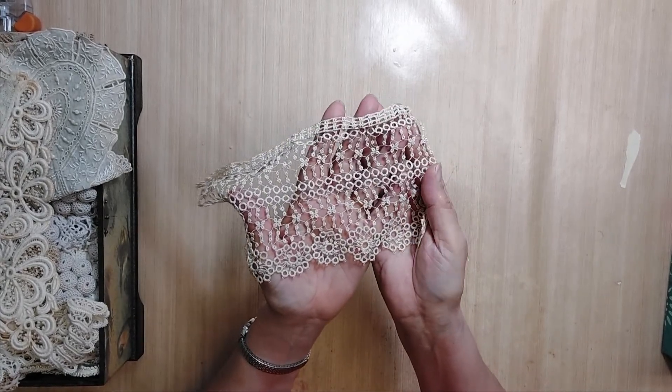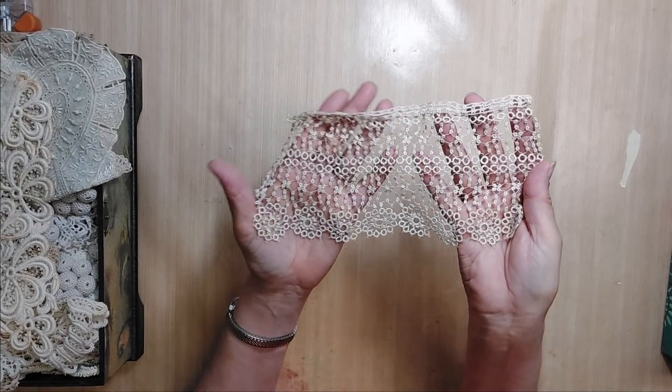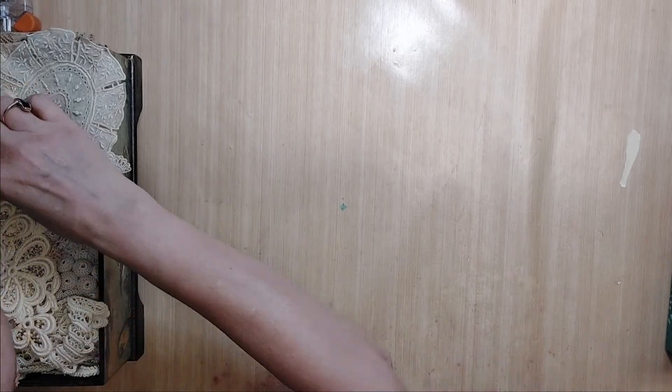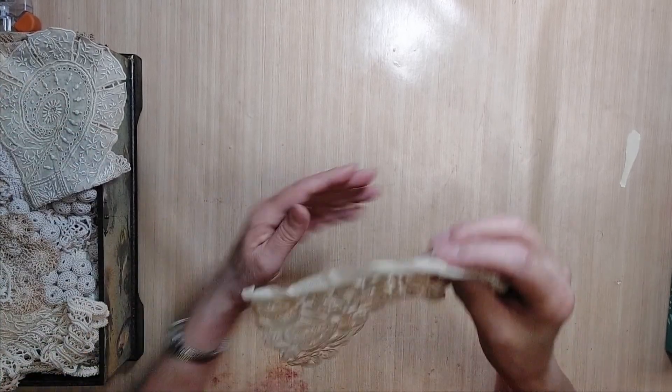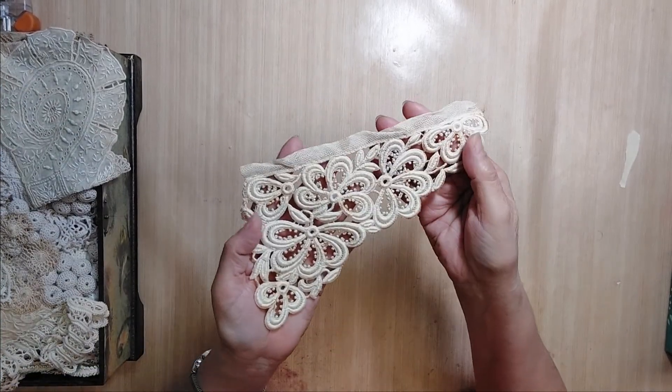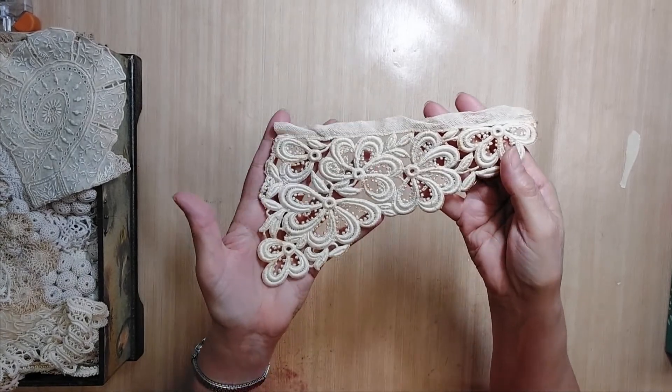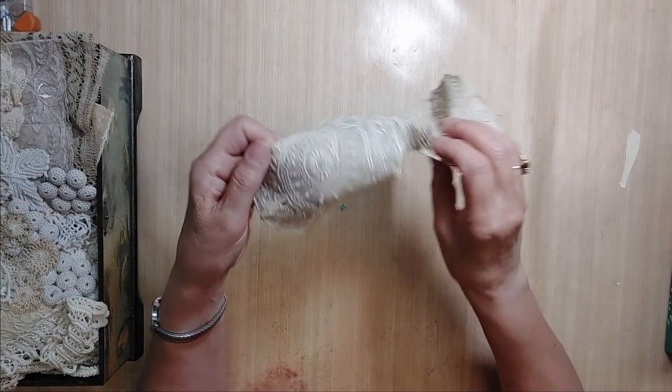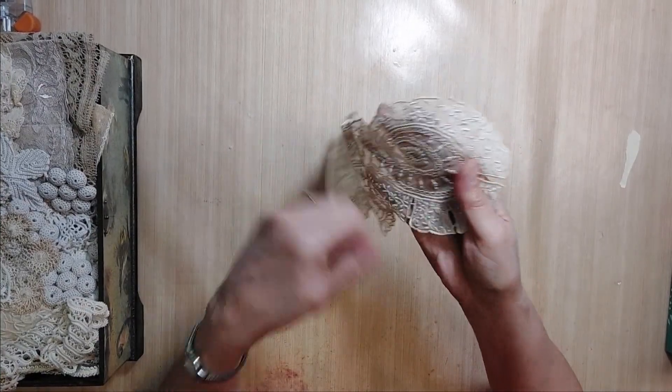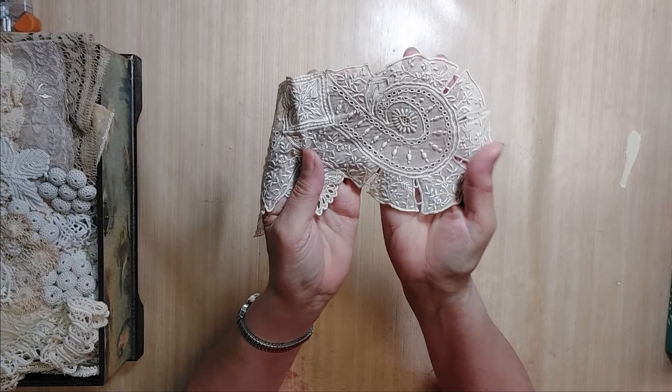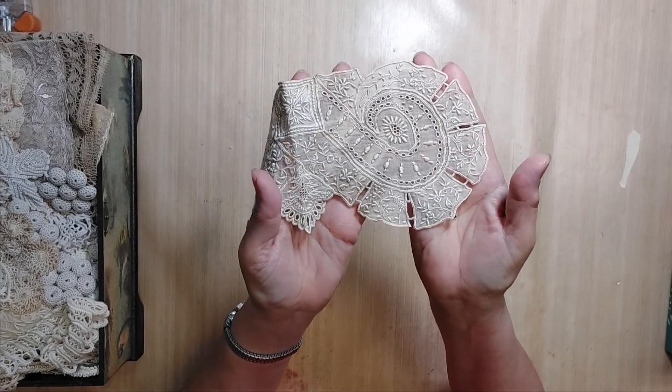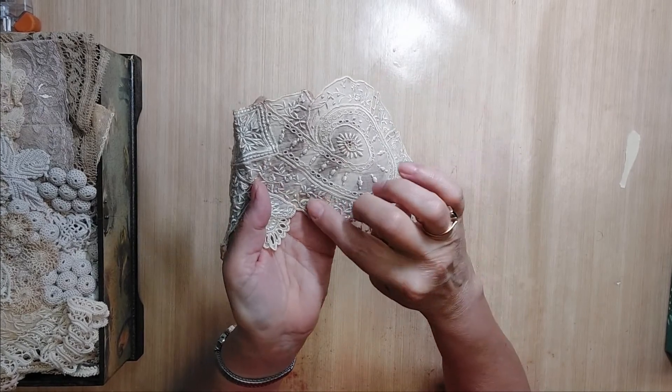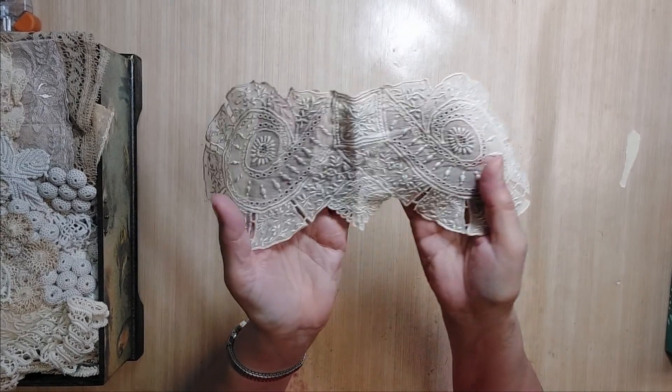Here's some very delicate tatting. Love tatting. This is part of a collar with some very heavy embroidery on it. This one is very unusual. I think this is the only one I have like this in my collection. It's got very detailed embroidery on it.